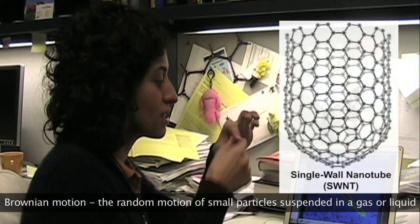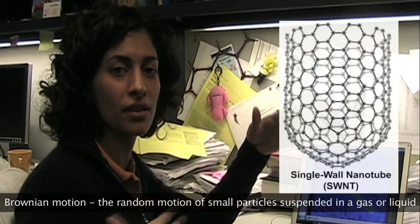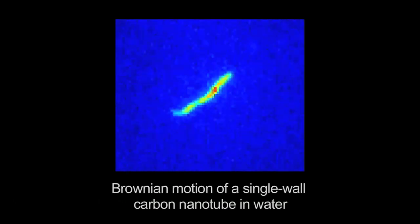What we have is just a single wall carbon nanotube in water which is being bombarded by the water molecules. So you see all these shapes and these vibrations that it acquired because of the bombardment with the water molecules.